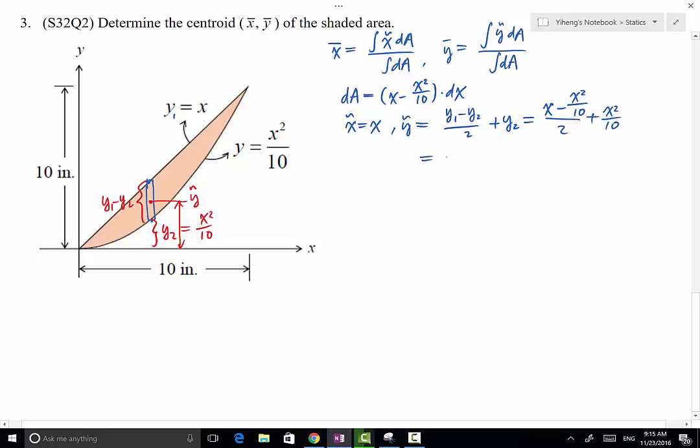Now we're ready. We can start to do the integration. Let's start with area A, which is the denominator in these two equations, which is the total integration of dA. And that equals to, remember dA equals x minus x squared over 10 dx, integrated from 0, x equals 0 inch, to x equals 10 inch. This is a simple polynomial. This equals x squared over 2 minus x cubed over 30, evaluated from 0 to 10, and this equals 50 over 3.